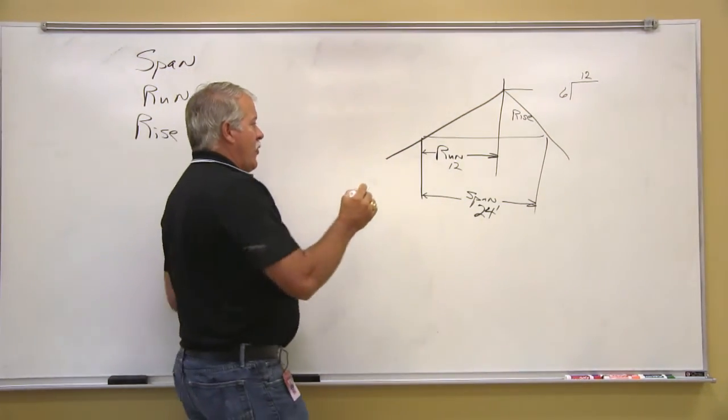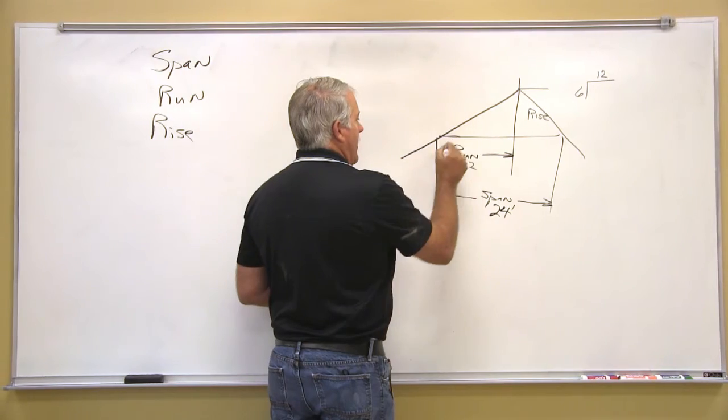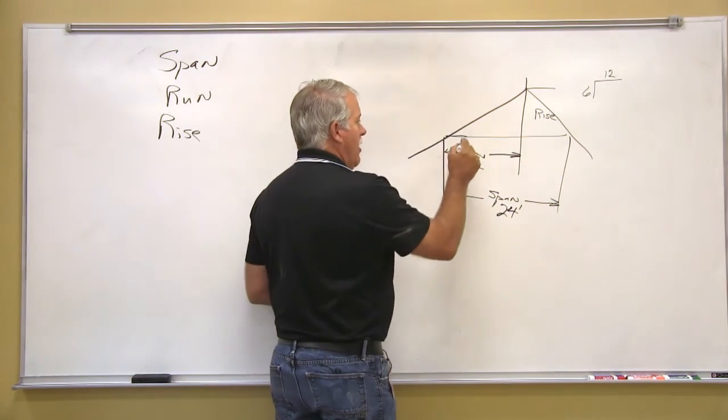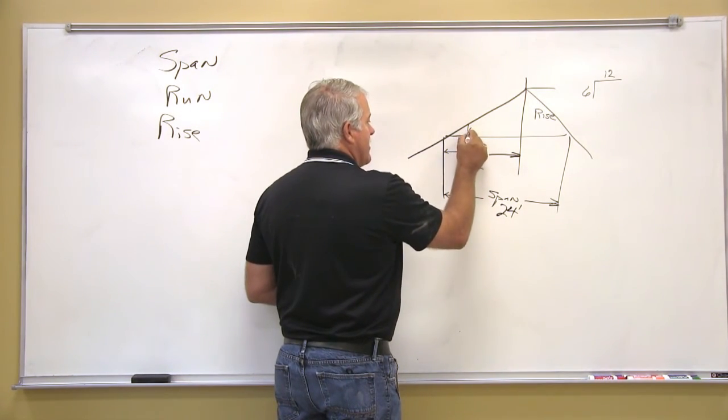So what that means is for every foot that we go over this direction, we go up 6 inches.